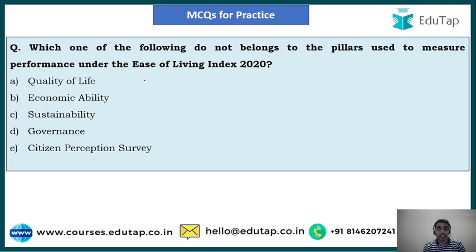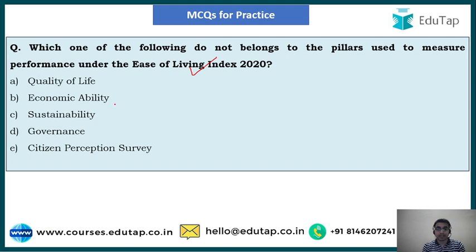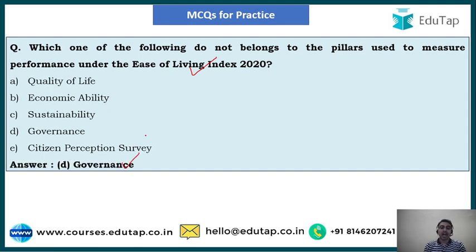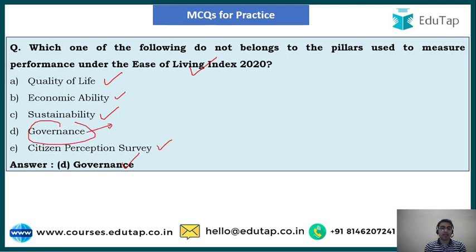Second question: Which one of the following does NOT belong to the pillars used to measure performance under the Ease of Living Index 2020? Options: Quality of Life, Economic Ability, Sustainability, Governance, Citizen Perception Survey. There were four pillars — Quality of Life, Economic Stability, Sustainability, and Citizen Perception Survey. The right answer is option D — Governance, as governance is part of the Municipal Performance Index, not the Ease of Living Index.